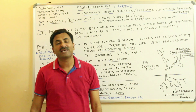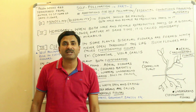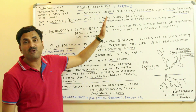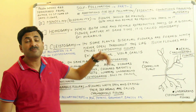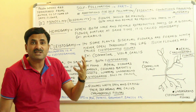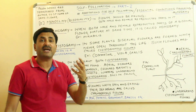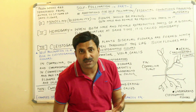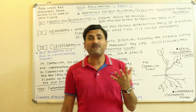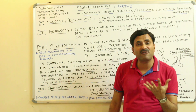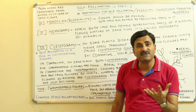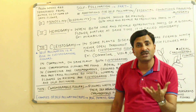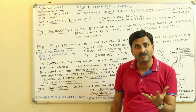Hello, in this video today we'll be discussing the adaptations for self-pollination, or the conditions which favor autogamy or self-pollination. First, you must know what self-pollination is: it is the transfer of the pollen grain from the anther to the stigma of the same flower.